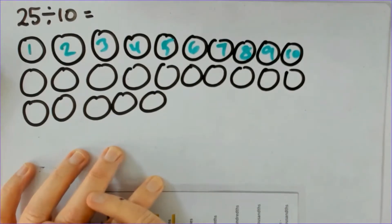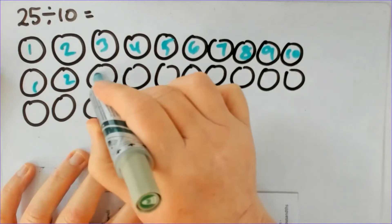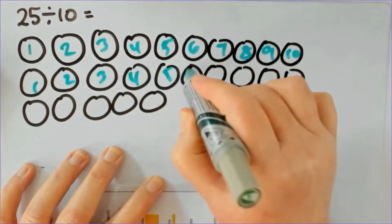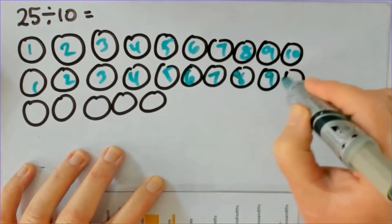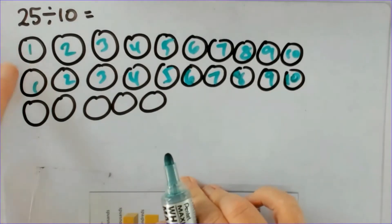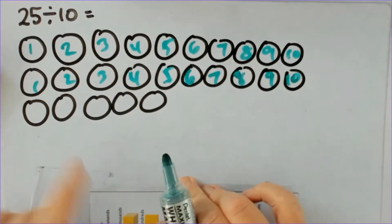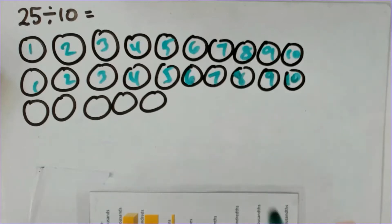And I'll say have I got enough to give them another pizza each and they'll say yes I have, so off I go again one two three four five six seven eight nine ten. So at this stage person one has two pizzas, person two has two pizzas, person three has two pizzas and so on.